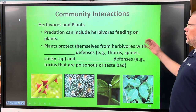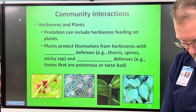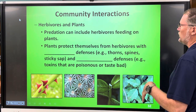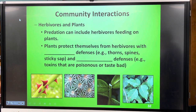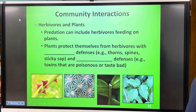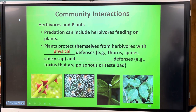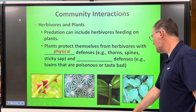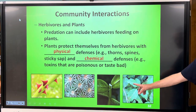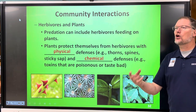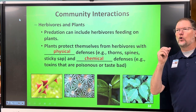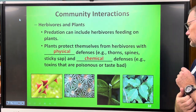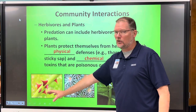We're still on page five. Predation can also include herbivores feeding on plants. Now plants can protect themselves — they have physical defenses like thorns, spines, toxic sap, or sticky sap, and other toxic defenses like poison ivy that will either hurt the herbivore or just taste bad so they'll spit it out and move on to the next plant. But animals have learned to adapt to all of these as well.